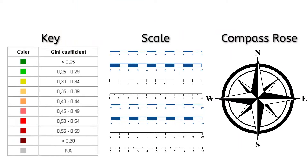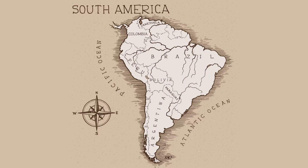Maps also have some basic components that help make sense of their contents: the key, the scale, and the directional indicator. The directional indicator, also known as a compass rose, indicates where the cardinal directions – north, south, east, and west – lie on a map.